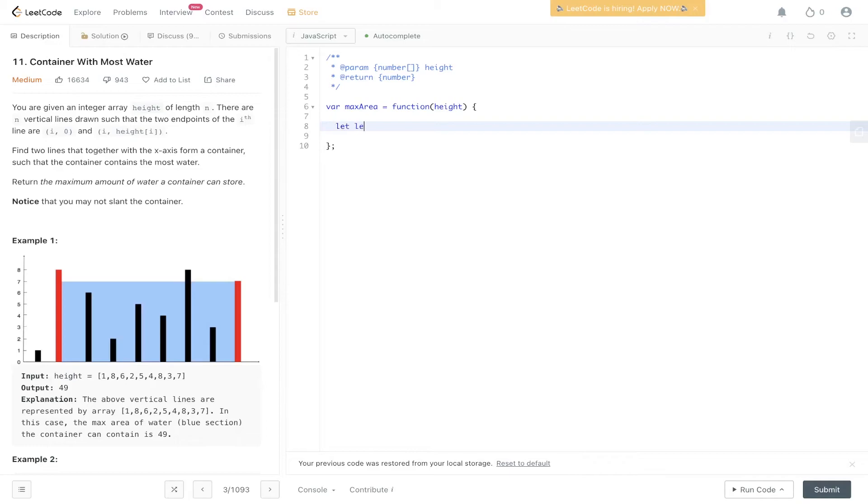Let left equals zero. Let right equal height.length minus one because that's the last value. Let maxima equals zero. We'll have the while loop while left is less than right. What we can do is work out a number of things. So the width equals right minus left.